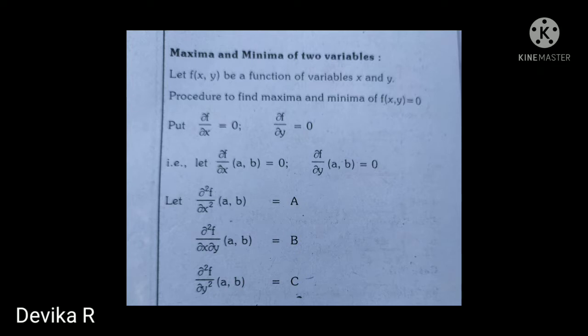The procedure to find maxima minima: take f(x, y) and find ∂f/∂x, differentiate with respect to x, equal to zero; and differentiate the function with respect to y equal to zero. Then substitute the point (a, b) — the value given in the problem — and equate these equations to zero.